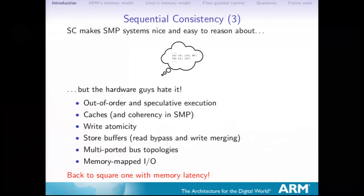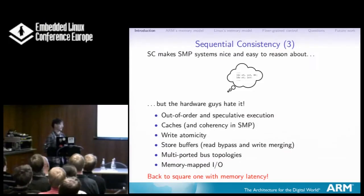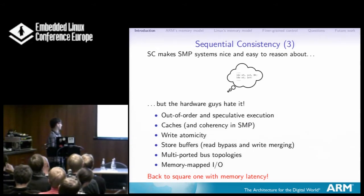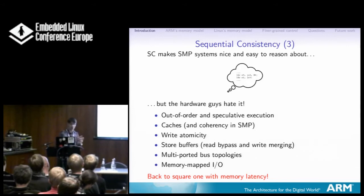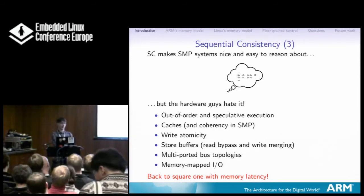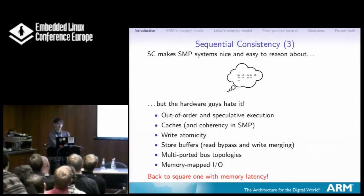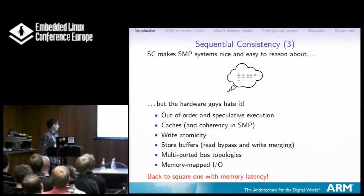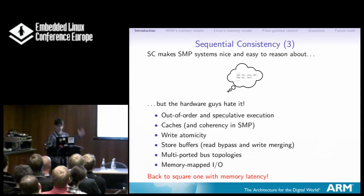The hardware guys hate sequential consistency, because for years on uniprocessor systems, they played tricks on software that we couldn't detect. They did out-of-order execution, speculation, store buffers — so you can hit in your own store buffer and bypass it so your writes go out of order. But you can't detect it until you throw another processor in there — it can sit back and observe you doing things out of order. Once you have multiple processors, software can detect this. So the hardware guys aren't going to fix it, because then it's back to square one with memory latency.